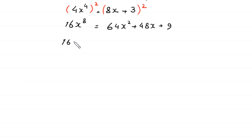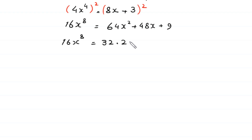So 16x to the power 8 equals 64x squared plus 48x plus 9. We can write 64x squared as 32 times 2x squared, plus 48x plus 9.